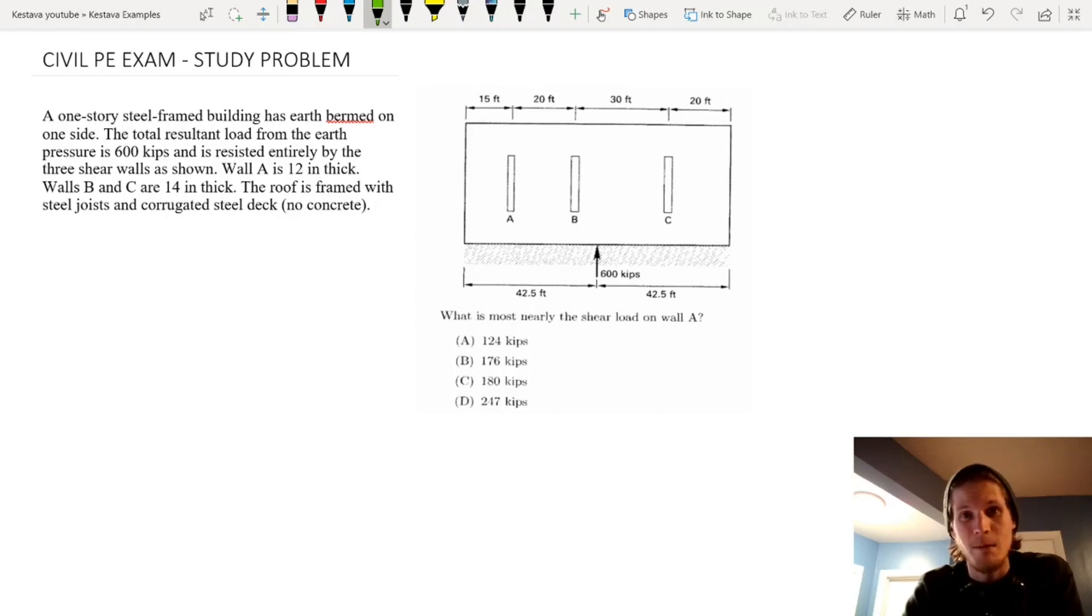Let's jump into today's problem. We have a one-story steel-framed building that has earth burned on one side, which just means that there's earth pushed up against one side of the building. The total resultant load from the earth pressure is 600 kips and is resisted entirely by the three shear walls as shown. So shear wall A, B, C.